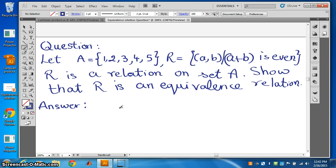Now R is a relation on set A. Show that R is an equivalence relation. R is a relation on set A means R is a subset of A cross A. We know how to write A cross A, then we will pick up all those ordered pairs (a,b) such that a plus b should be even. The sum of the first element and the second element should be even.